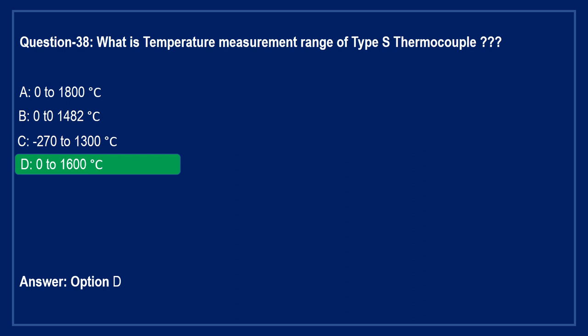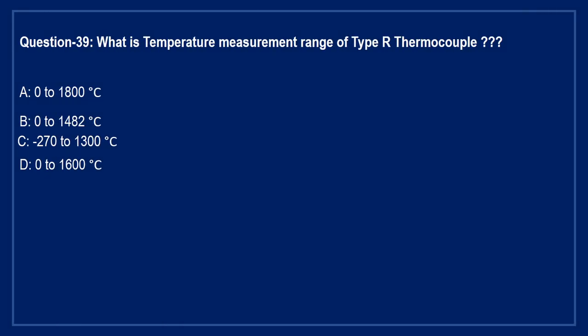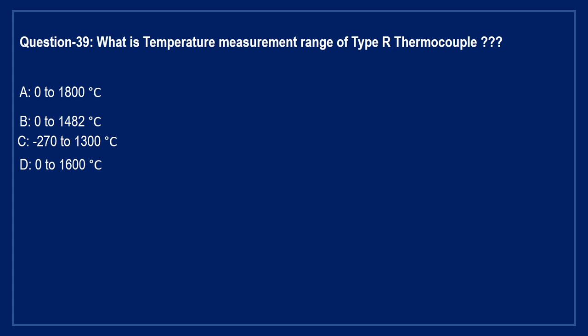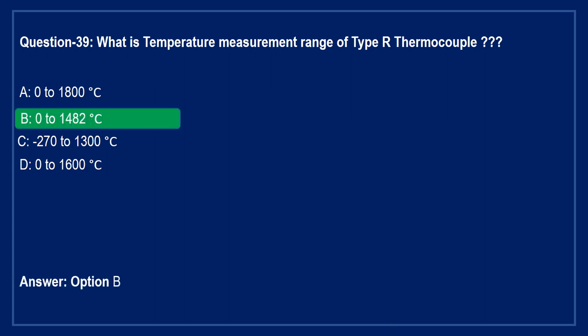Next question: what is the temperature measurement range of type R thermocouple? Options include 0 to 1800°C and 0 to 1600°C. The right answer is Option B — 0 to 1482 degree centigrade.